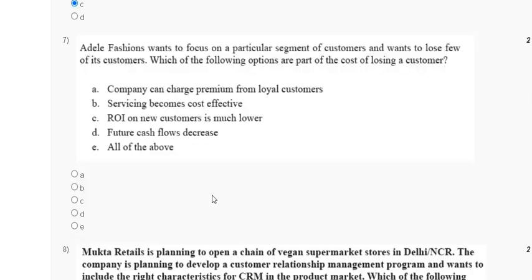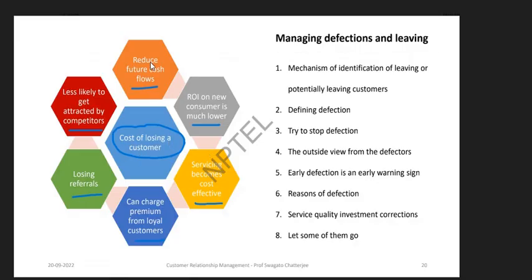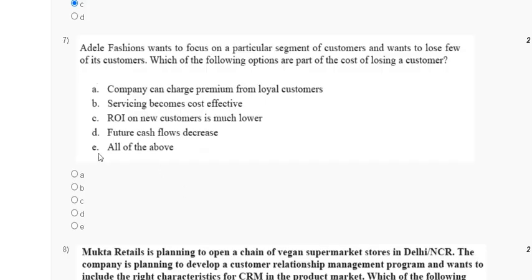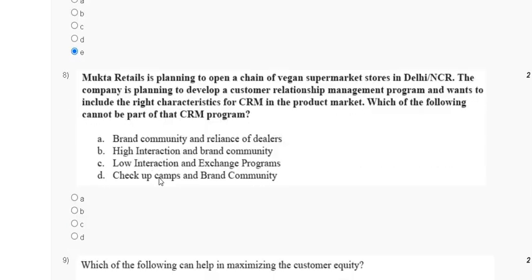Question 7: Adelaide Fashion wants to focus on a particular segment of customers and is willing to lose a few customers. Which of the following options are part of the cost of losing a customer? The explanation is that the cost of losing a customer includes reduced future cash flow, lower ROI on new consumers, less cost-effective servicing, ability to charge premium from loyal customers, and customers being less likely to be attracted by competitors. The correct answer to question 7 is option E.